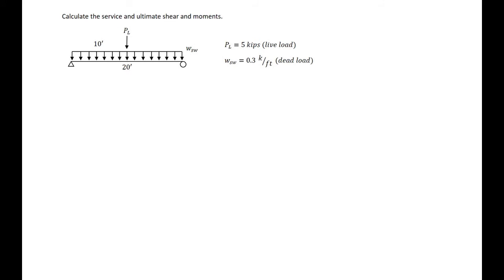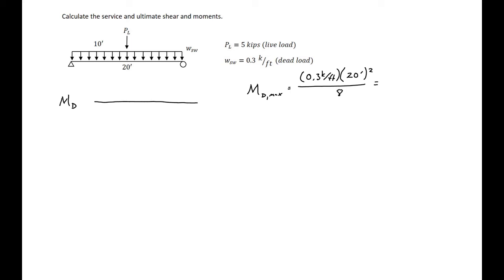Now we'll find our unfactored and factored moments, starting with the dead load moment. For a simply supported beam with a distributed load, the dead load moment at mid-span is WL²/8. With W equal to 0.3 kips per foot and L equal to 20 feet, this gives a dead load moment of 15 kip-feet, with a parabolic shape peaking at mid-span.